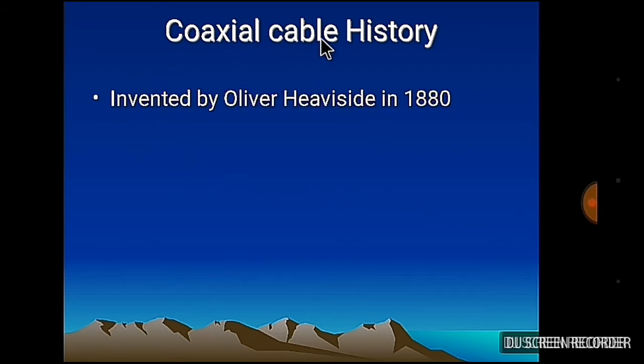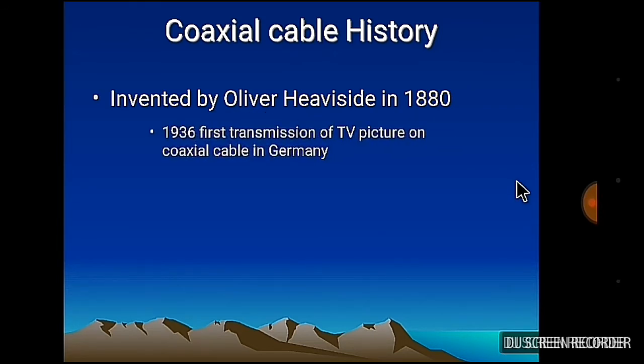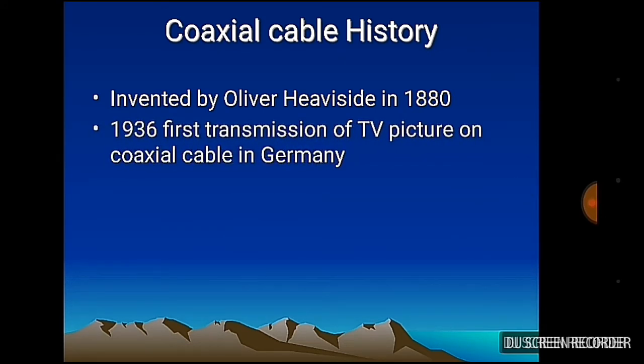Now comes to coaxial cable history. The coaxial cable was invented by scientist Oliver Heaviside in 1880. In 1936, first TV transmission of picture on coaxial cable in Germany. From 1880 to 1936, it was used for telephone purposes. Here 'co' means two and 'axial' means in one line. As the name suggests, coaxial cable has two conductors, both conductors in the same axis.